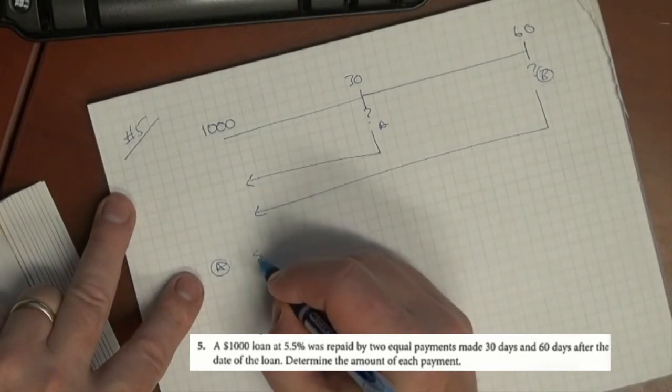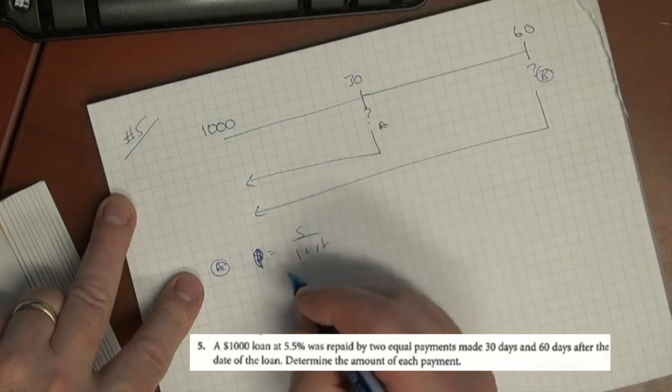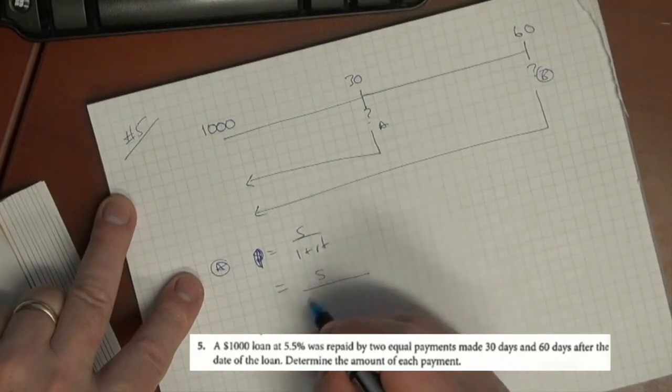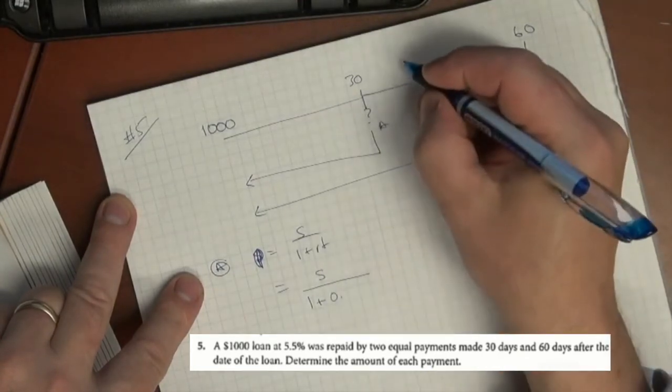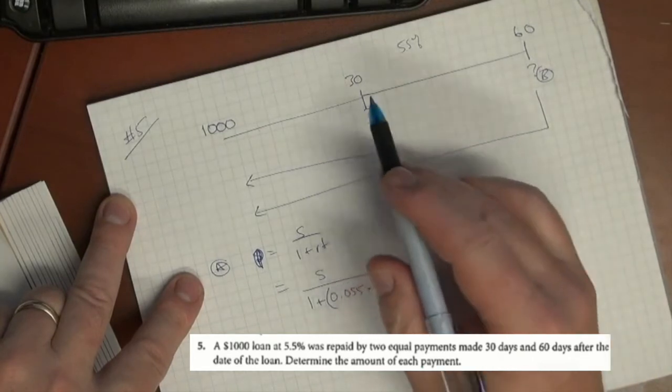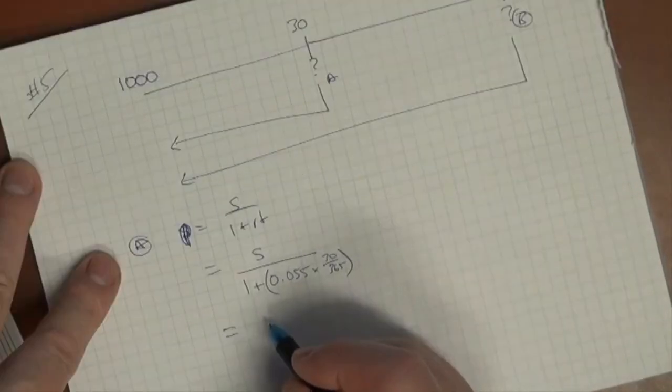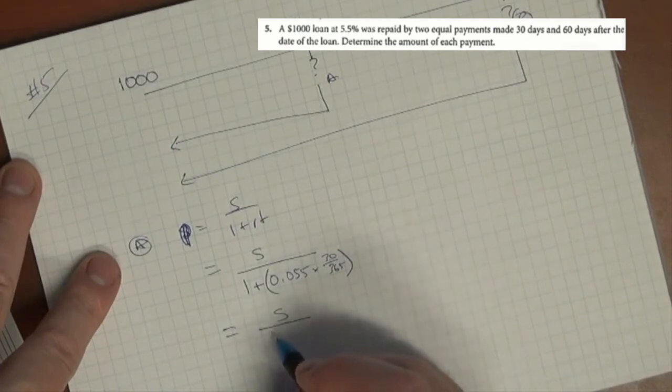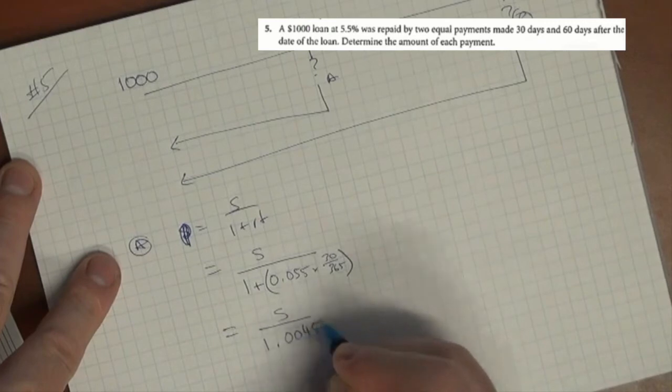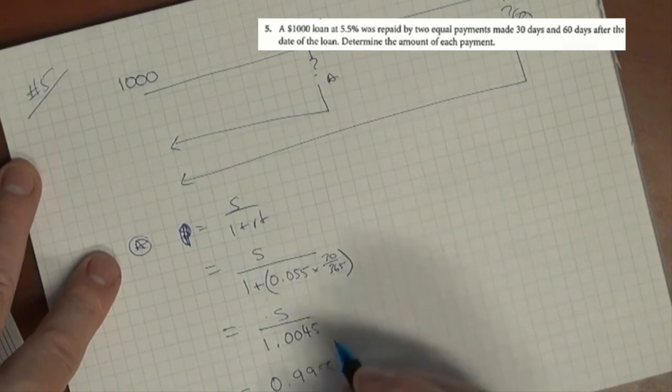For A, P equals S over 1 plus RT. Our S in this case is unknown, so it's S divided by 1 plus 0.055 times 30 days - 30 over 365. That's S over 1.0045. We do division on that - take 1S divided by 1.0045 and get 0.9955S. So that's the first instance.